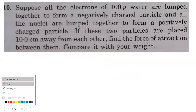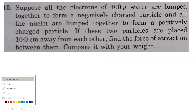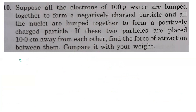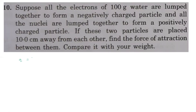Next problem: suppose all electrons of 100g of water are lumped into a negatively charged particle and all nuclei into a positively charged particle. If placed 10 cm apart, find the force of attraction. From the previous problem, the charge magnitude is Q = 5.35×10⁶ C. So q1 = q2 = 5.35×10⁶ C (opposite signs), separated by r = 10 cm = 10⁻¹ m.